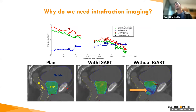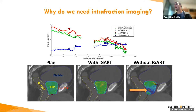Going back to the prostate trace from earlier: you can see the plan provides full coverage of the target. Without any motion management there's a big hole in the dose, which would lead to poor health outcomes. When you add motion management, you go back to the original optimal plan.